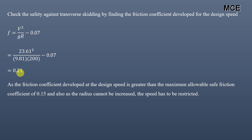Since the friction coefficient developed at the design speed is greater than the maximum allowable safe friction, and we cannot change the radius of the curve, we have to restrict the speed at this road. We will take the super elevation as 0.07 and find the maximum allowable speed, because at the design speed the required friction coefficient is 0.21, which exceeds the maximum limit of 0.15.